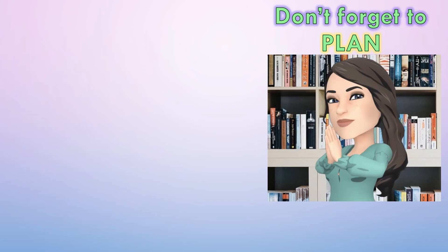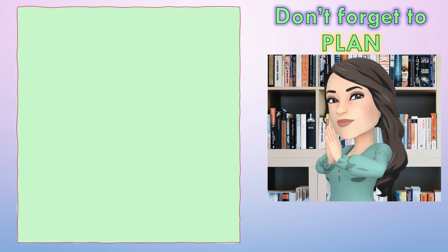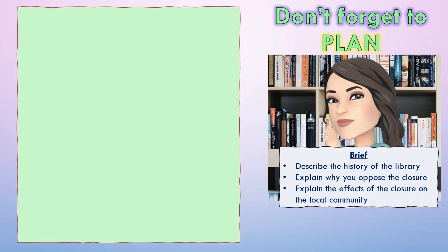I would suggest you make a plan before you start writing your answer. This ensures you tick everything on the brief and also lets you know where you're going before you start, so you don't ramble or go off on a tangent. So we have our brief. The first thing we need is a title — remember to think of those dramatic or emotive words. For example, 'Tragic loss in our community' — it will hook your reader in and make them want to read more.